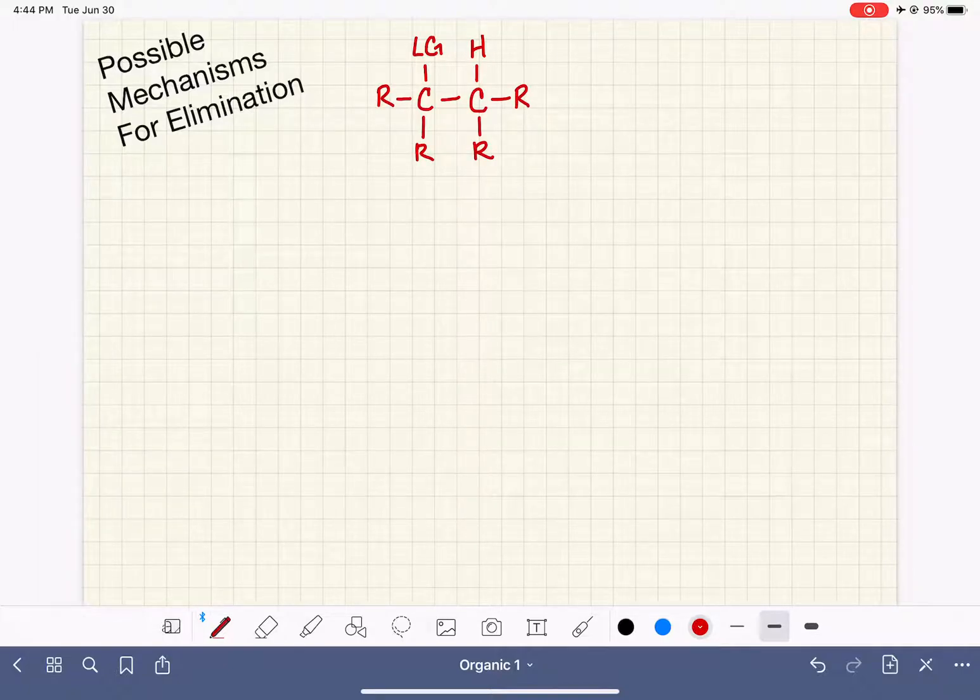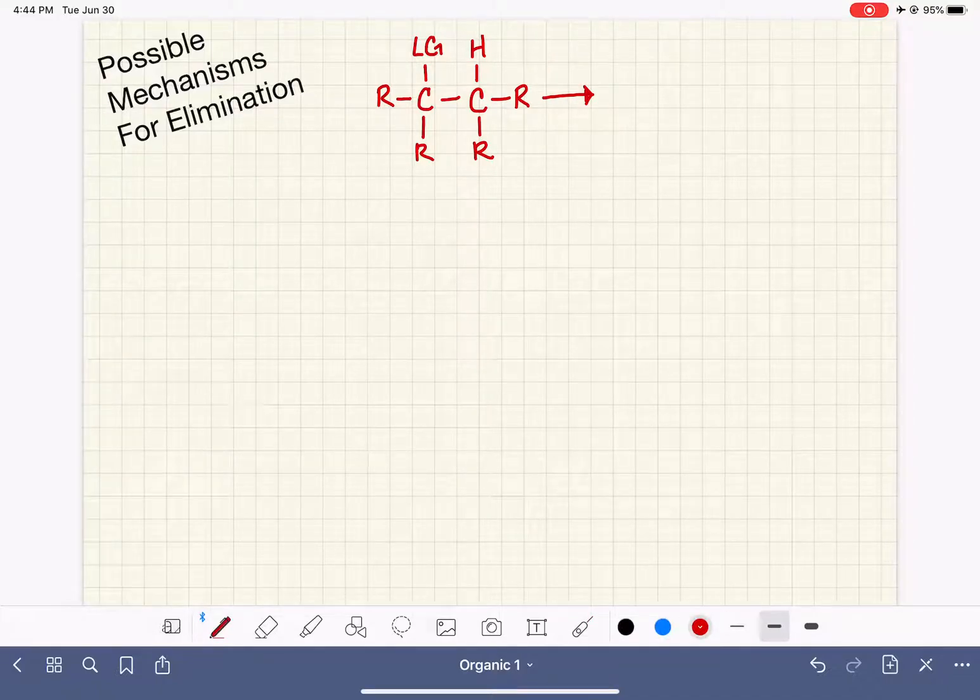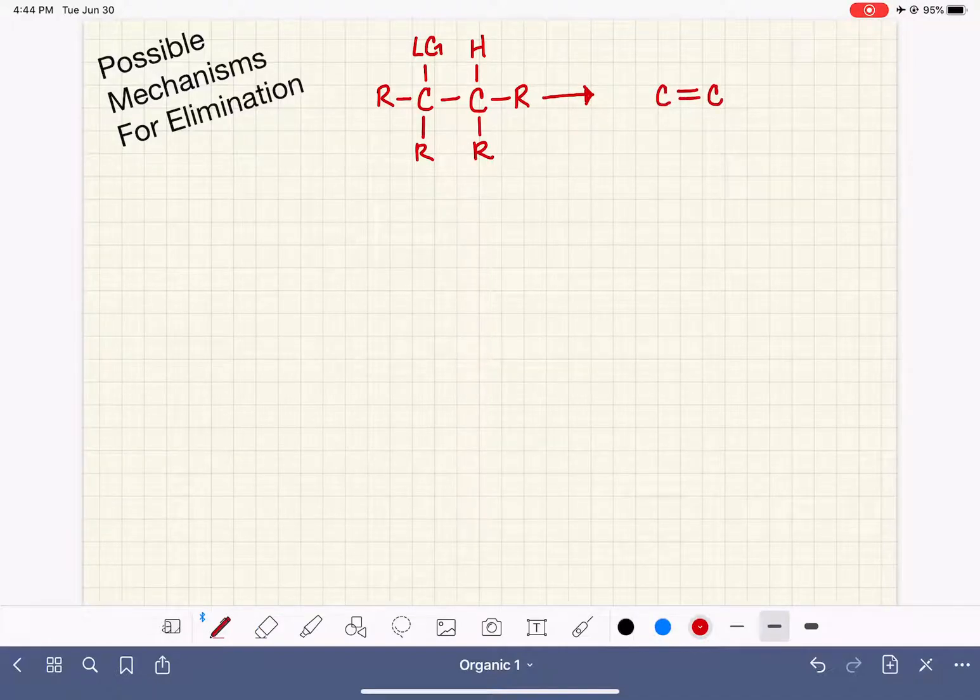Because whatever they might be, it doesn't really matter. In this reaction, we're going to use some sort of substance here. We're not going to draw it into this overview. Something is required here for the reaction to take place, and what we end up getting is elimination of both the leaving group and the hydrogen on the two carbon atoms. Formation of a double bond between those two carbon atoms.